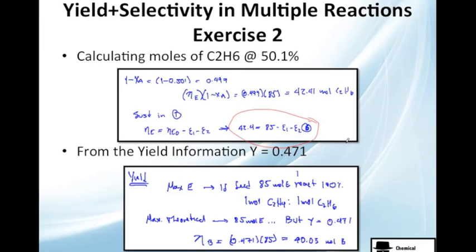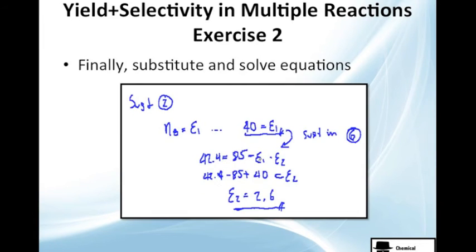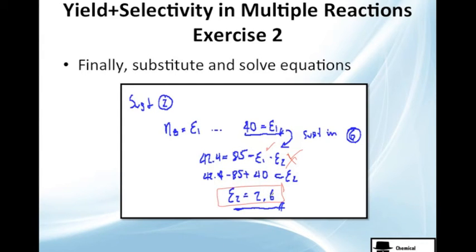And then we are going to use this epsilon 1 to substitute in this equation. Right here. And we get. We have this. We don't have this. And we have this. We just look for epsilon 2. And it's 2.6. That's good. But, that's not what we are asked for. We are going to solve more.